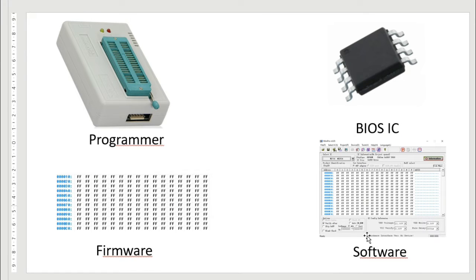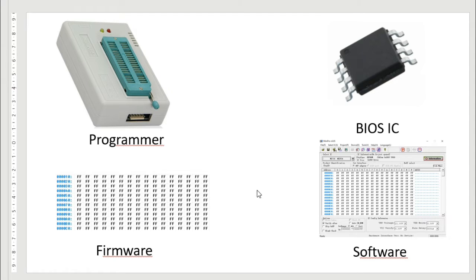We have the BIOS IC, the programmer, and the software. The software is one of the most important parts because it contains the firmware. To transfer the firmware to the BIOS IC, you need the programmer and the software as the interface. Through the software, the firmware will be transferred to the BIOS IC. So to program the BIOS you need: the BIOS IC, the programmer, the software, and the firmware.